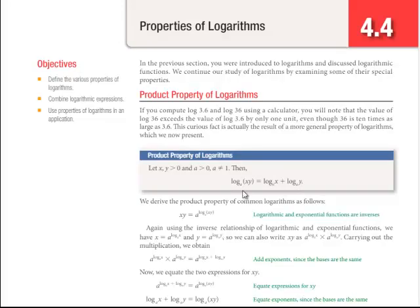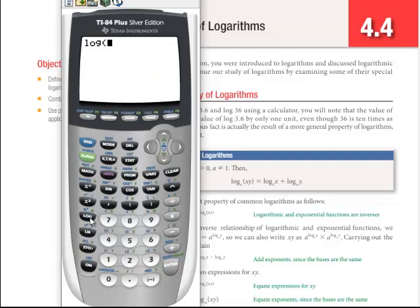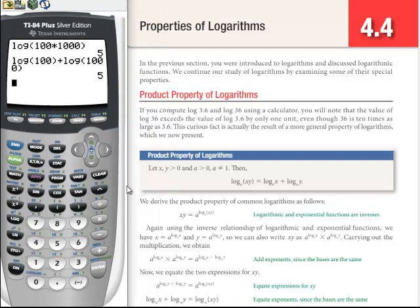So here's the product property. Log of xy equals log of x plus log of y. Let's try that on the graphing calculator. Instead of using base a, I will just use base 10. So log of 100 times 1,000, which of course is 100,000. The base 10 logarithm of that should be 5. Of course it is. So log of 100 plus log of 1,000 will be 2 plus 3, and of course it's 5 as well. So the multiplication here becomes an addition.